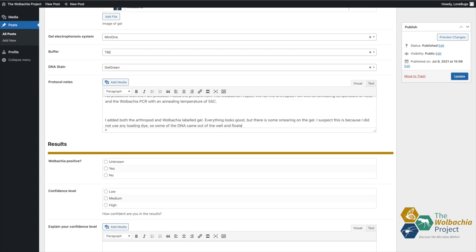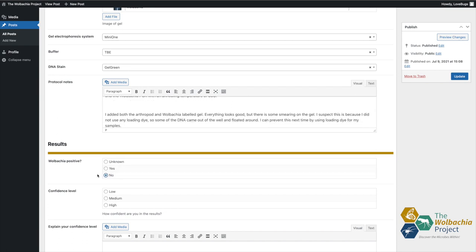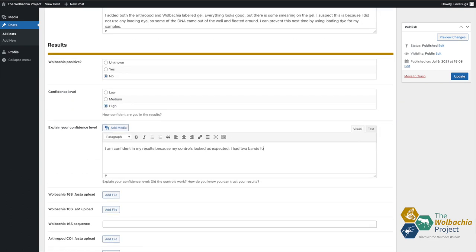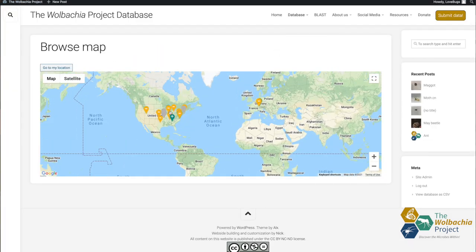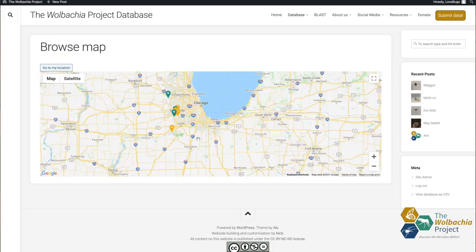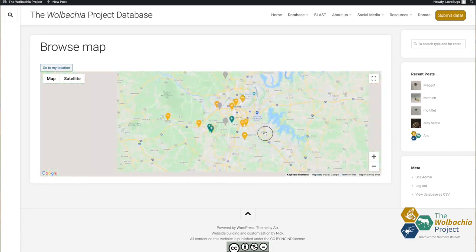Once I interpret my labeled gel, I'm able to determine if my arthropod had Wolbachia or not. Once I save this database post, other researchers and students across the globe will be able to refer to my data and my results.